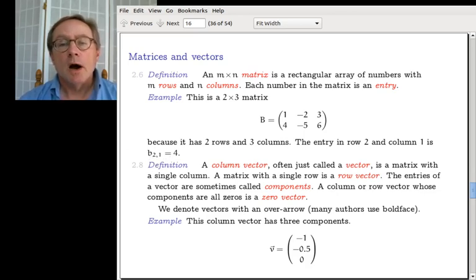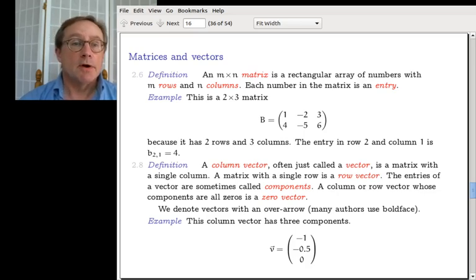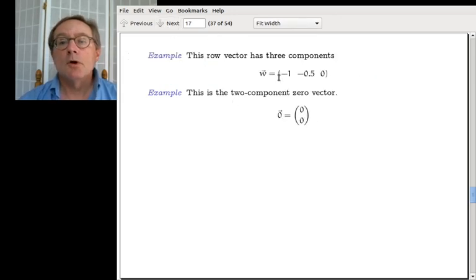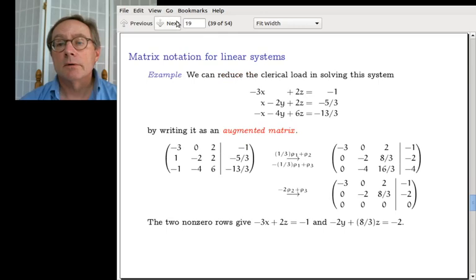I should have mentioned I like over arrow because you often see boldface, very often see boldface in other books. But I can't do boldface in handwriting or on a blackboard. So I like the over arrow and I put it in both places. But boldface is very common, very common. In fact, maybe more common than over arrow. So this is a row vector with three components and this is the two component zero vector.